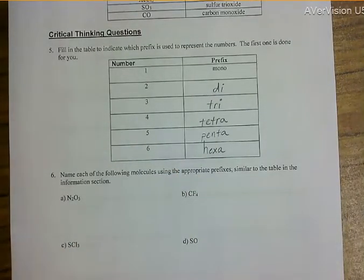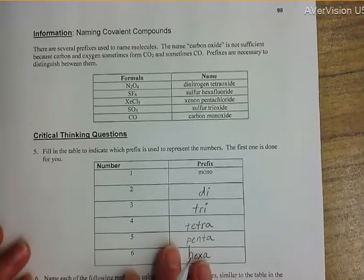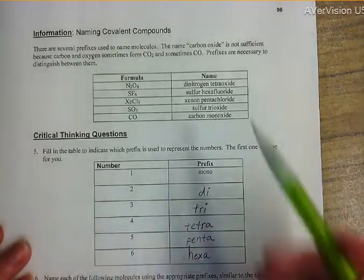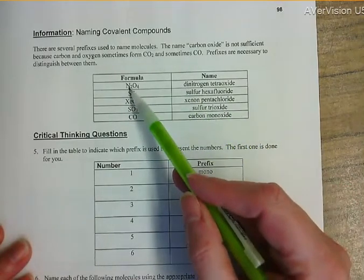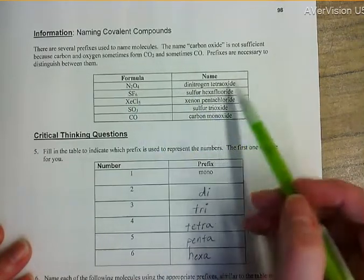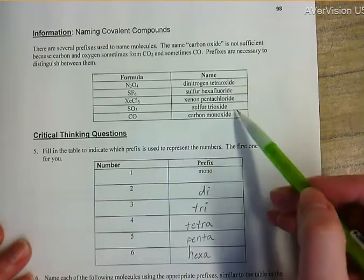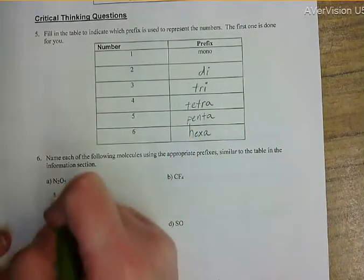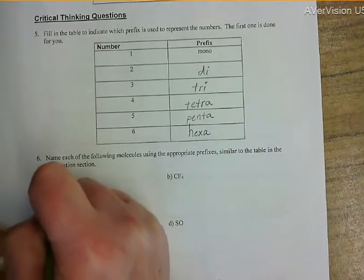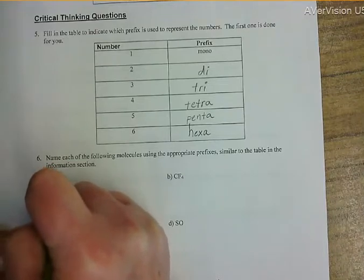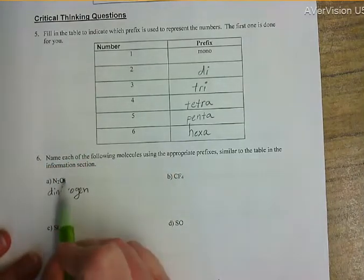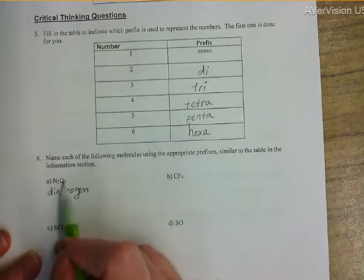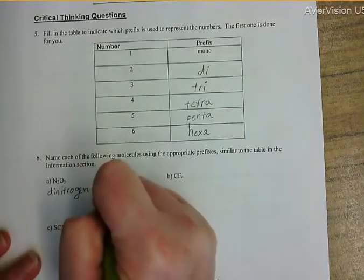Number six: name each of the following molecules using the appropriate prefixes. Notice that the subscript becomes a prefix, and also notice that all of the second elements end in '-ide'. So N2O5 — N is nitrogen, two is di, so this is dinitrogen; five is penta and oxygen becomes oxide, so pentoxide — giving dinitrogen pentoxide.